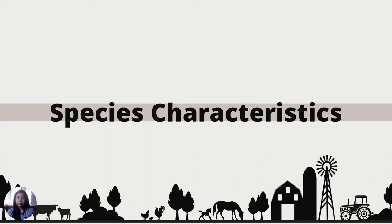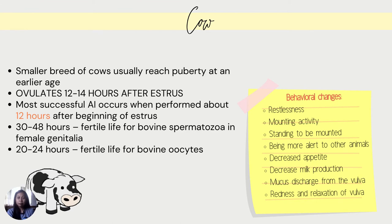For cows, smaller breeds usually reach puberty at an earlier age. Ovulation occurs 12 to 14 hours after estrus. Artificial insemination is most successful when performed about 12 hours after the beginning of estrus. Fertile life of bovine spermatozoa in the female genitalia is 30 to 48 hours, and fertile life of bovine oocytes is 20 to 24 hours. Behavioral changes in cows during estrus include restlessness, mounting activity, standing to be mounted, being more alert to other animals, mucus discharge from the vulva, decreased appetite, decreased milk production, and redness and relaxation of the vulva.